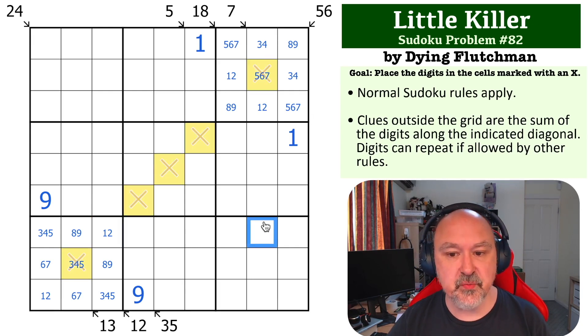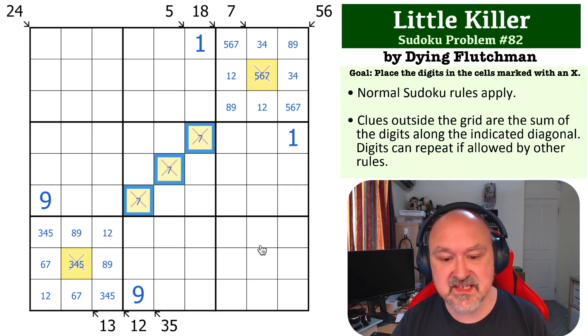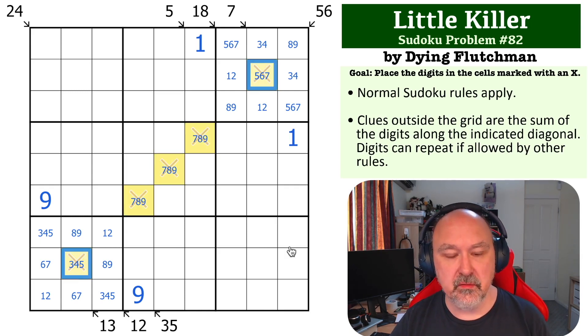So we've still got 36 to get from these cells. Those cells must sum to 36. Now the maximum you could put into these cells is 7, 8, 9, which is 24. So we need to get another 12 from those cells.